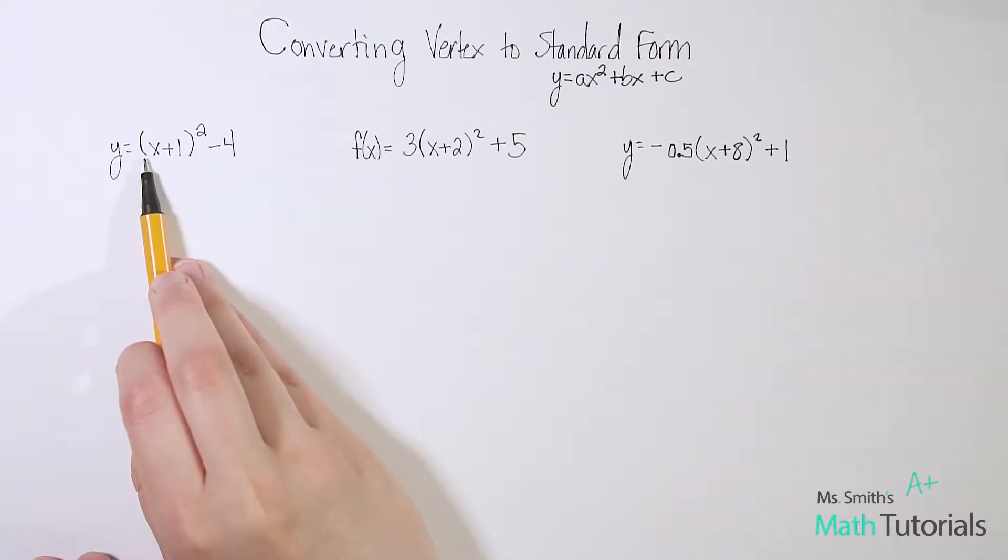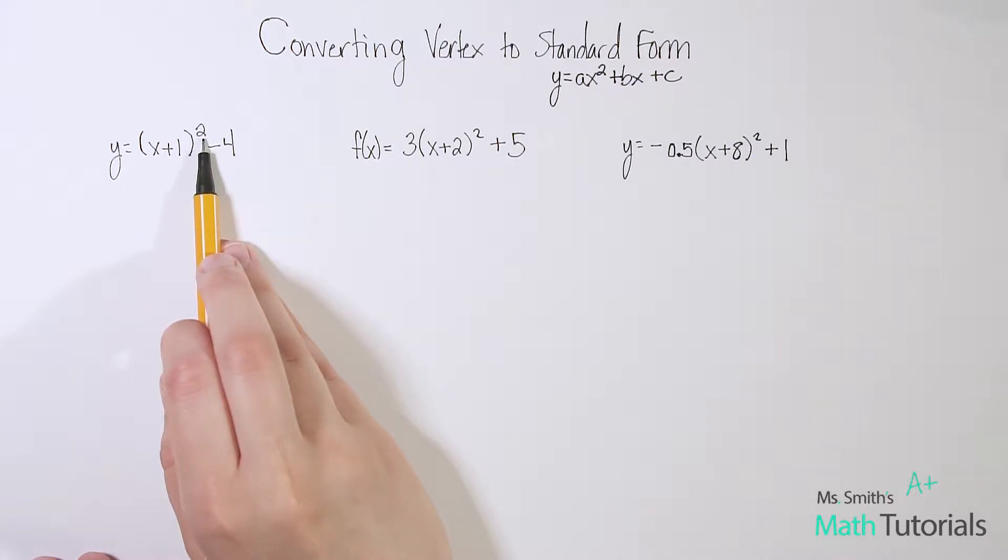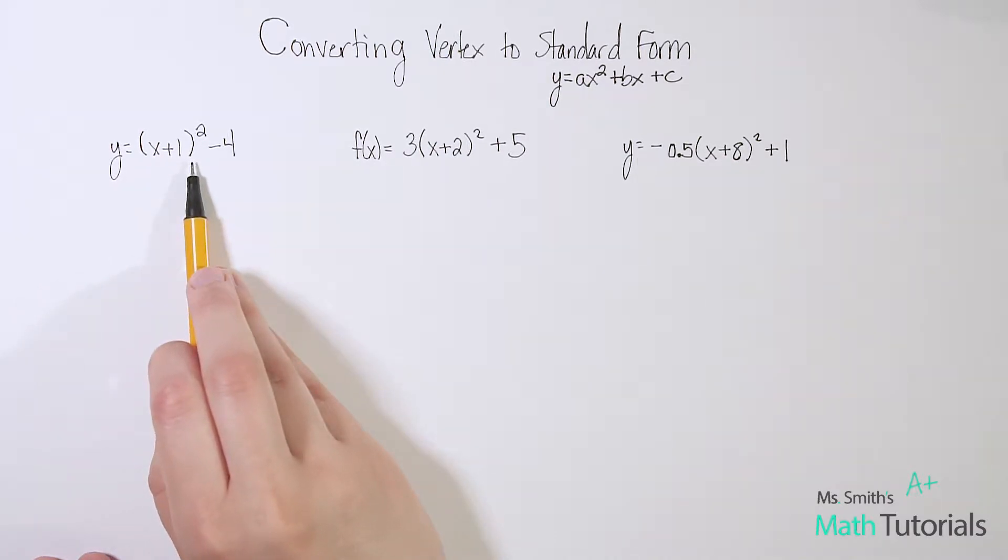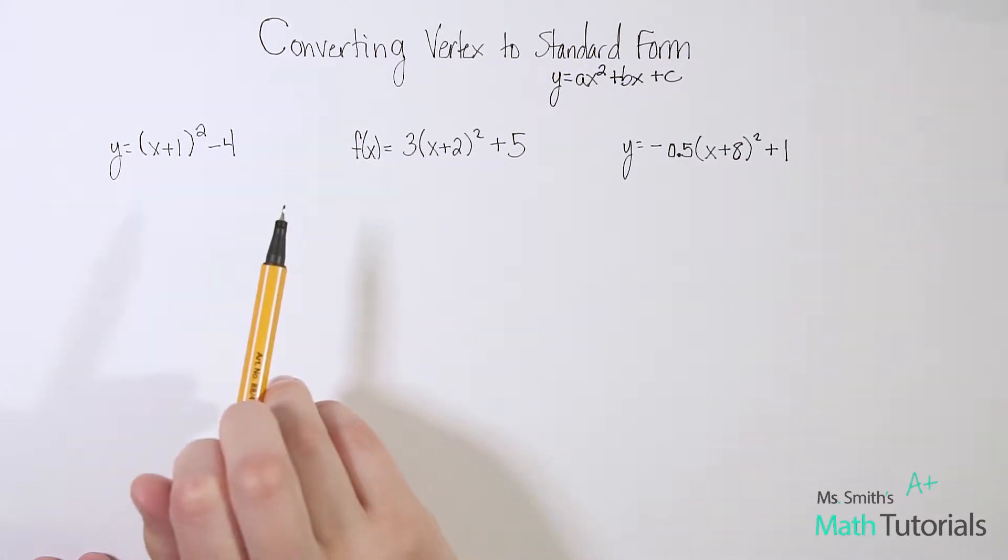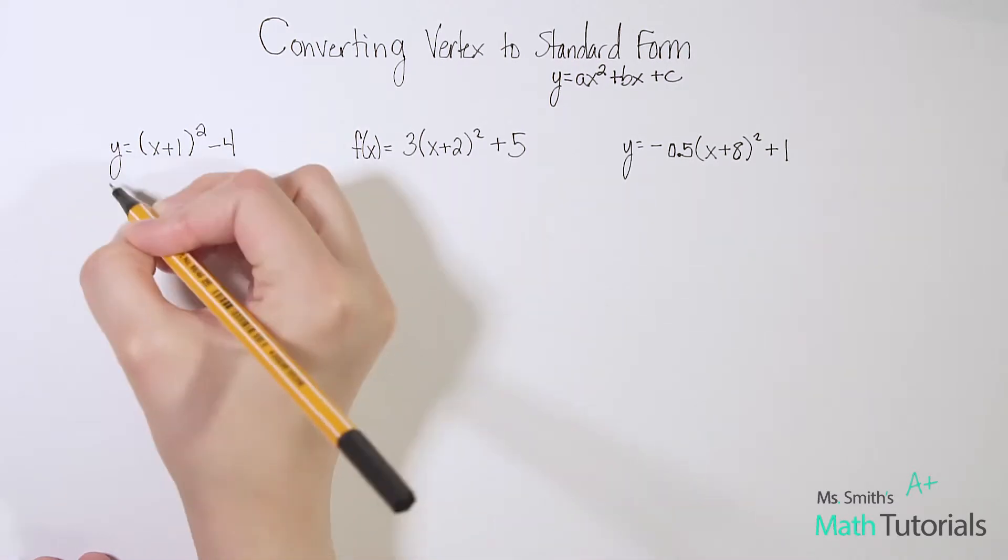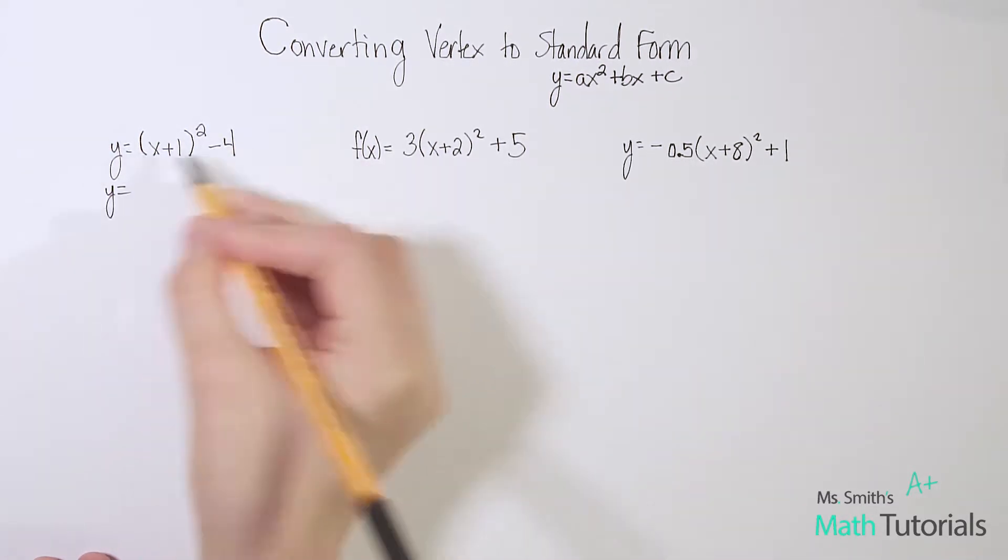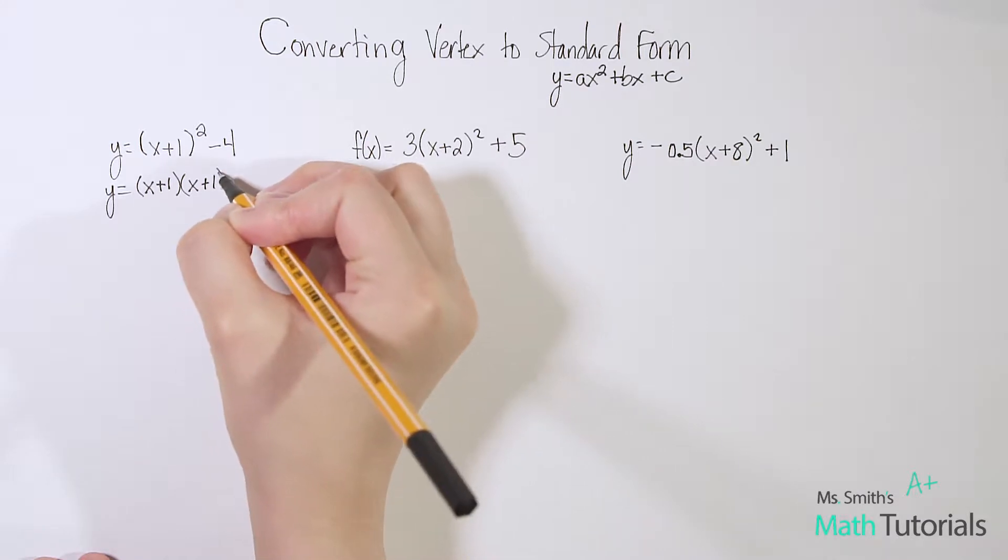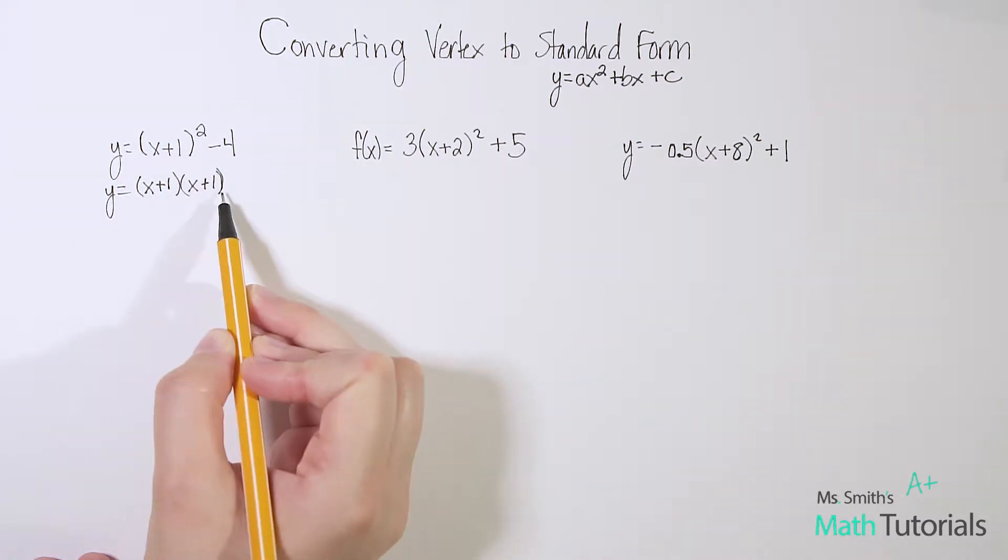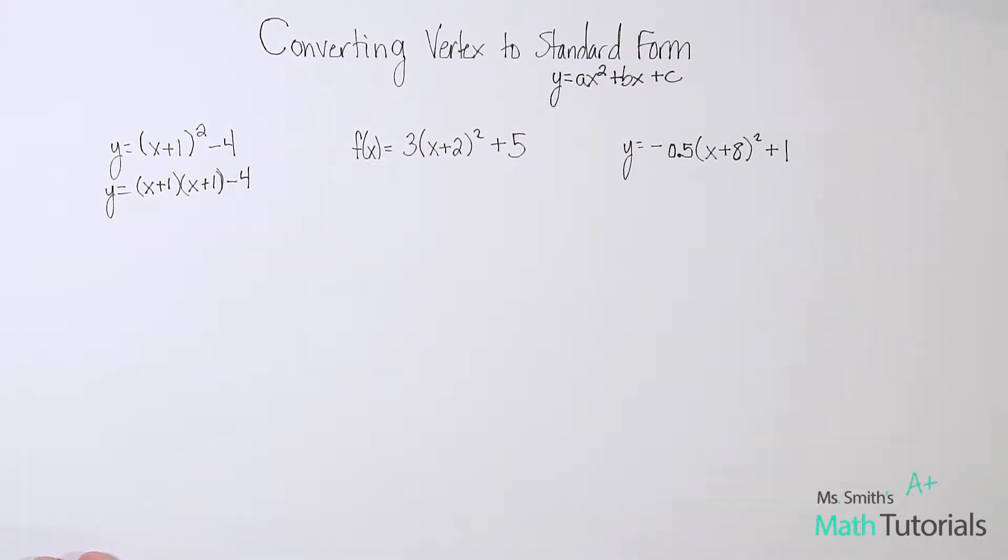The first thing we want to do is recognize that this is a binomial squared. A lot of students want to try to distribute that power of two, thinking power to power exponent laws means we multiply the powers. That doesn't work here because this is a binomial. That would only work for monomials. Since this is a binomial, I cannot distribute that power of two. But what I can do is rewrite it twice: (x+1)(x+1). That's what this means, x+1 squared written twice. And then we have our -4 hanging out at the end.